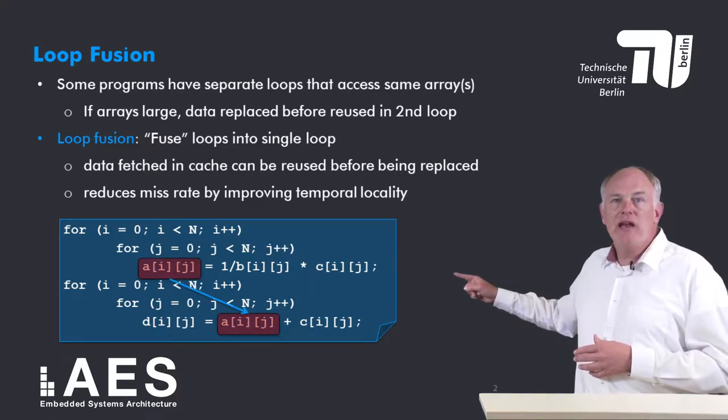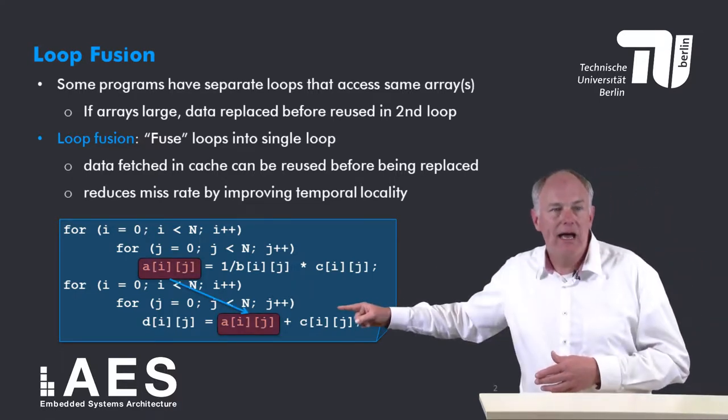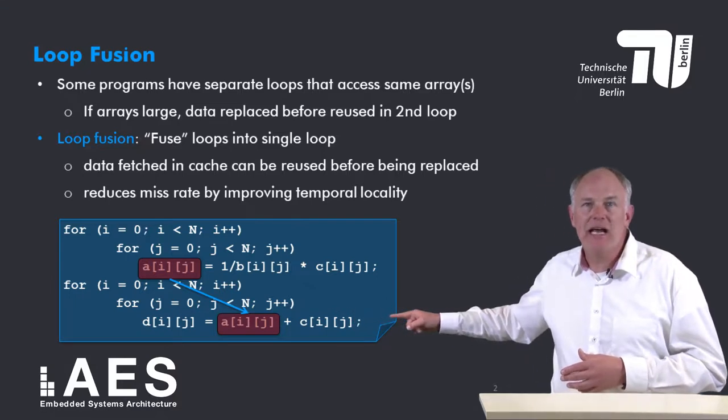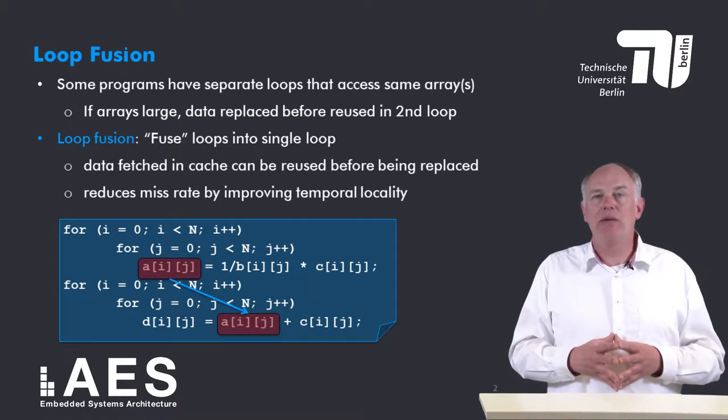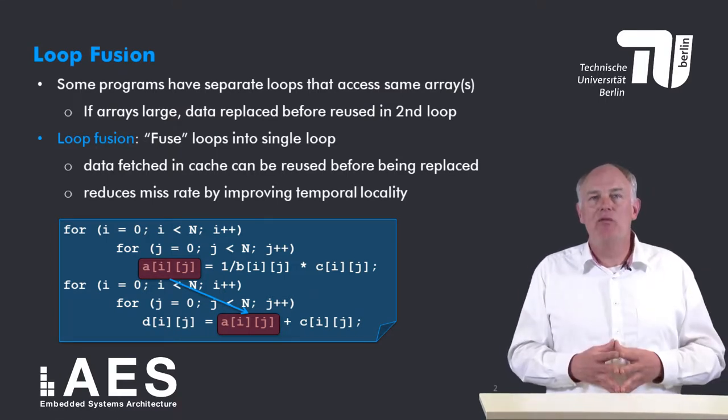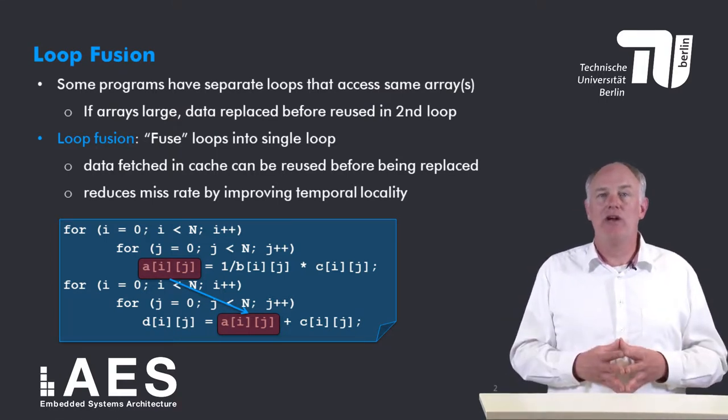We see that the first loop writes A[i][j] and the second loop reads A[i][j]. If the matrices are too large to keep in cache, A[i][j] will be replaced before the second loop reuses it.